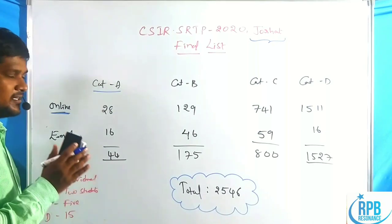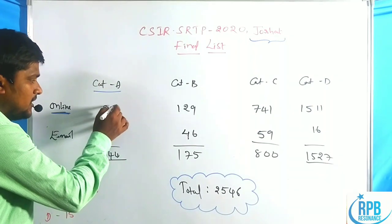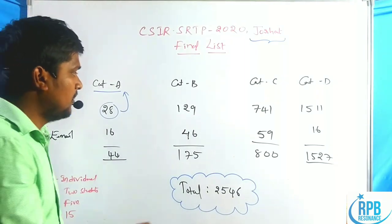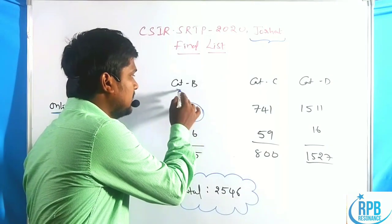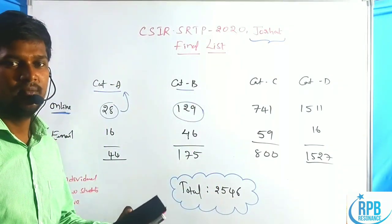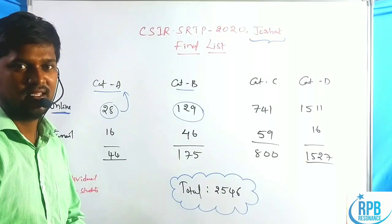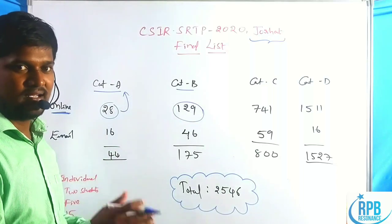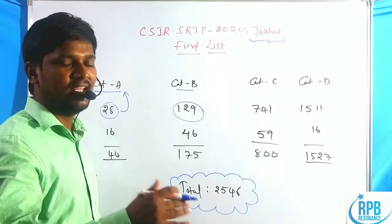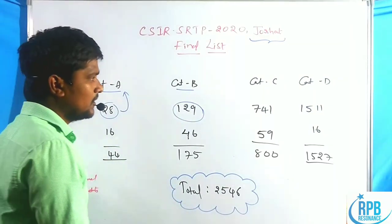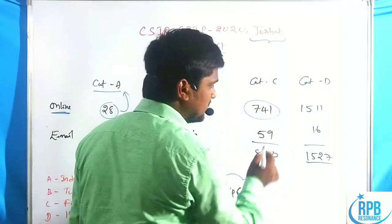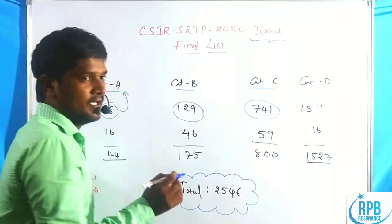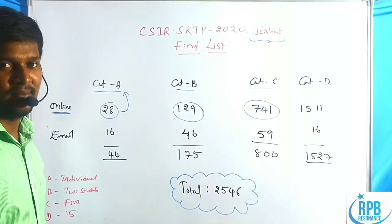The first 28 members are allotted a single individual project — Category A. 129 members are allotted Category B, where two students are combined together and work with twice-weekly mentor interaction. 741 candidates are in a category with weekly once mentor interaction.